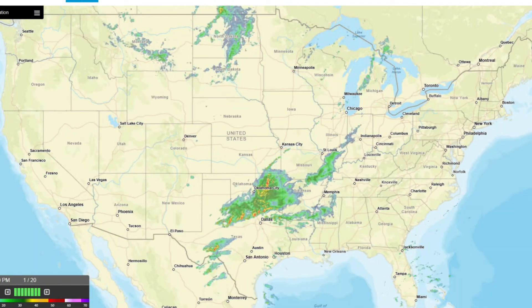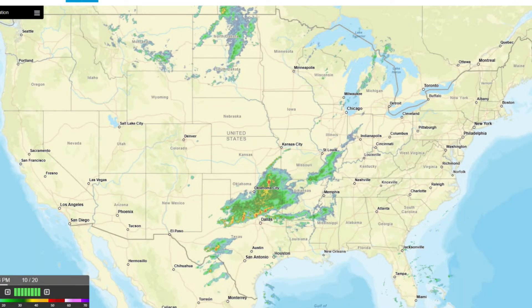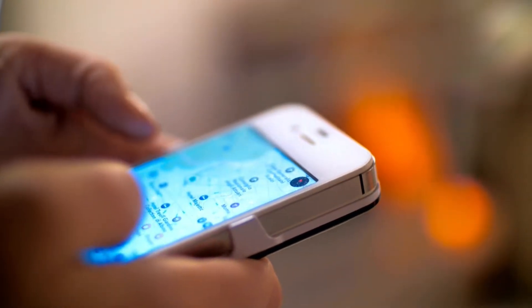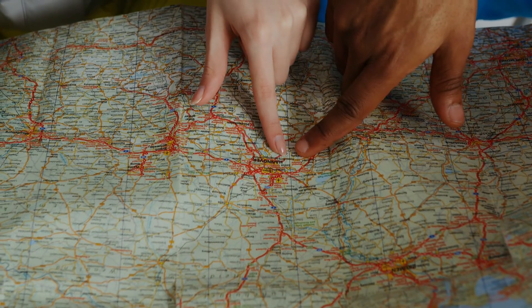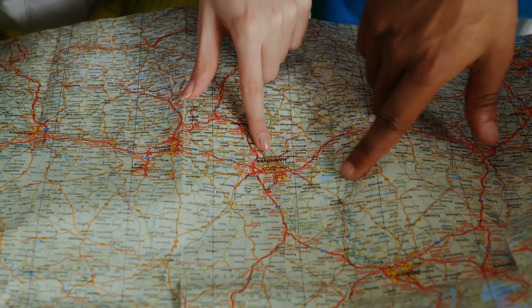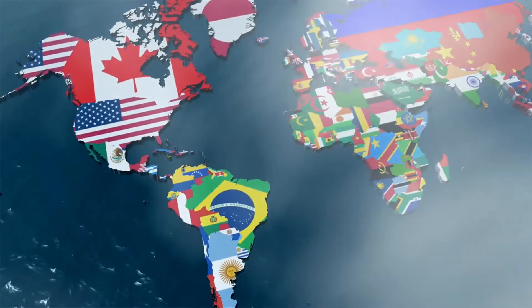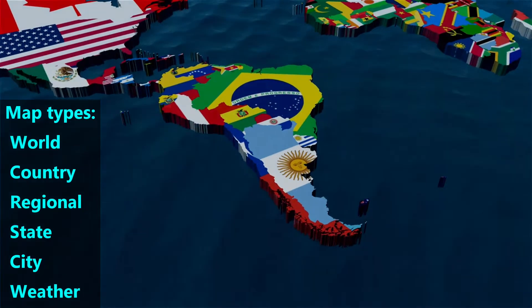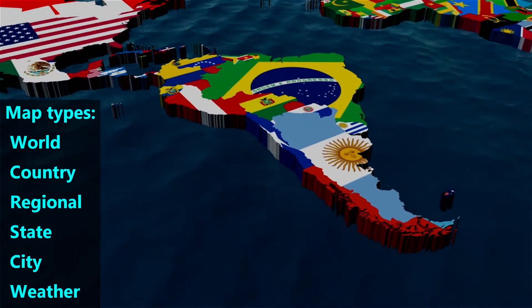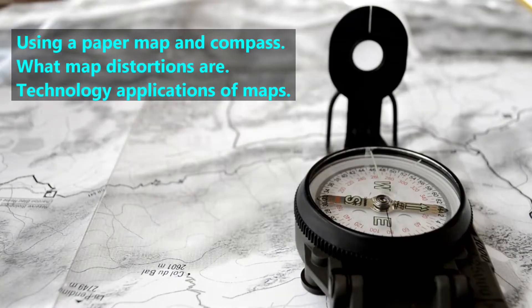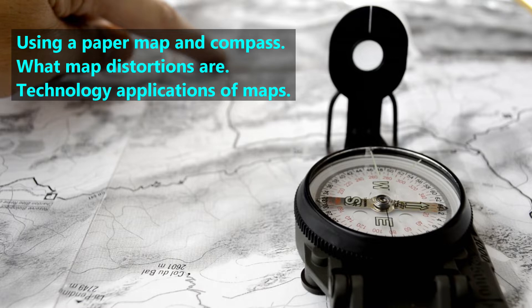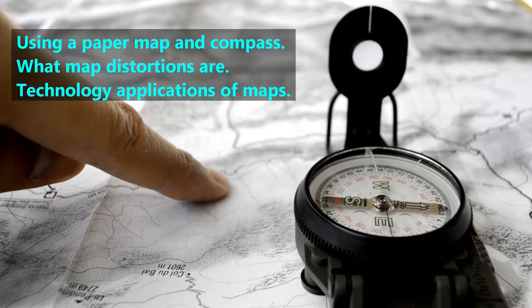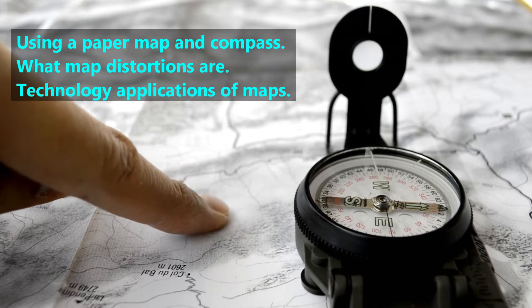Almost every day we see maps. If we watch the weather forecast, we see maps. If we're trying to find a place, we use maps. If we're learning about a country or state, we use maps. In this video, we'll introduce 6 common map types: world, country, regional, state, city, and weather. Then we'll introduce how to use a paper map and compass to find somewhere, what map distortions are, and technology applications of maps.